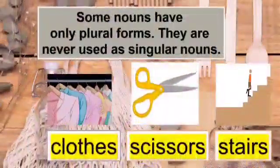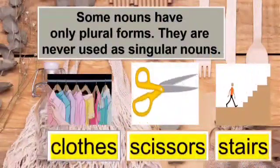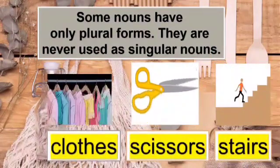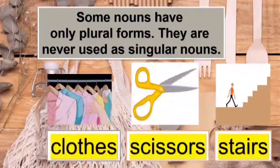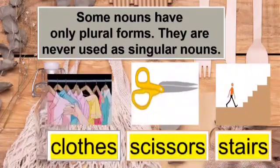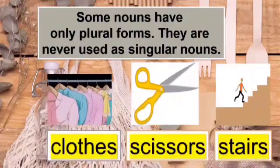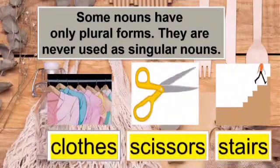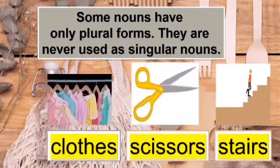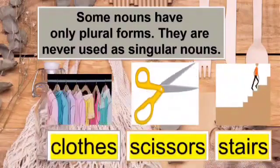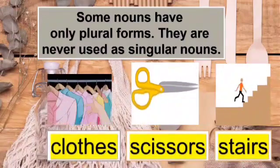Some nouns have only a plural form and are never used as singular nouns. For example, clothes — we never say 'clothe'. It is always 'clothes'. For example: I am wearing clothes. We will always use the term clothes. Other examples include scissors and stairs.